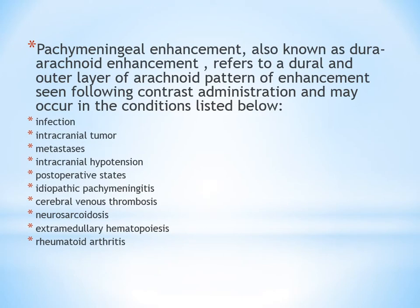Pachymeningeal enhancement is also known as dural enhancement — it involves the dura, the outer layer of the meninges. It is referred to as dural-arachnoid enhancement, seen following contrast administration, and may occur in: infection, intracranial tumor, metastasis, intracranial hypotension, post-operative state, idiopathic pachymeningitis, cerebral venous thrombosis, neurosarcoidosis, extramedullary hematopoiesis, and rheumatoid arthritis.